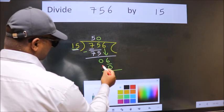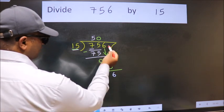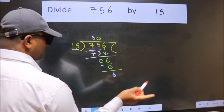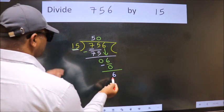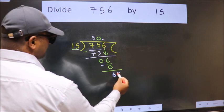Now we subtract. We get 6. Over here we did not bring any number down. And 6 smaller than 15.